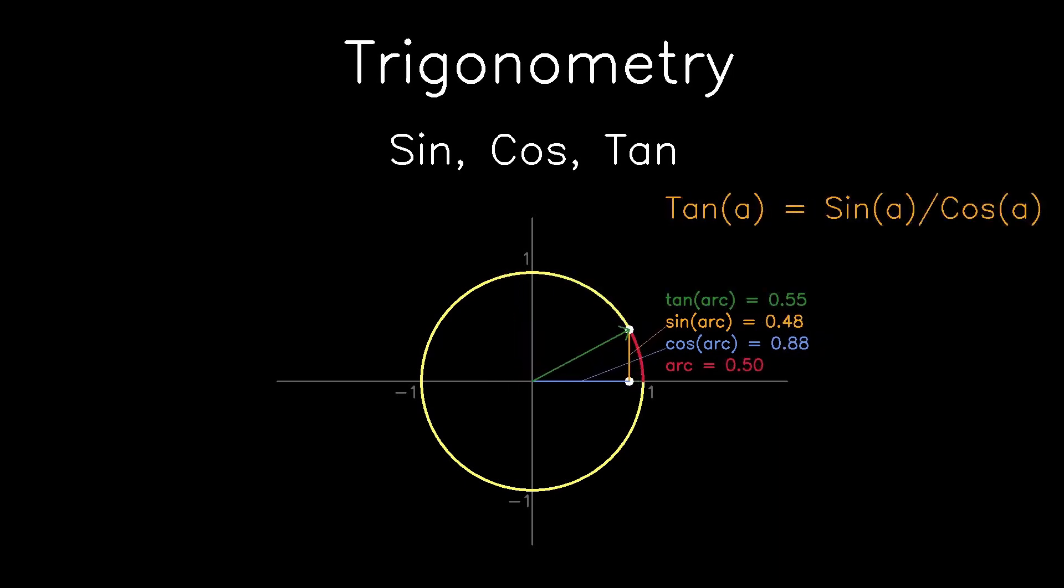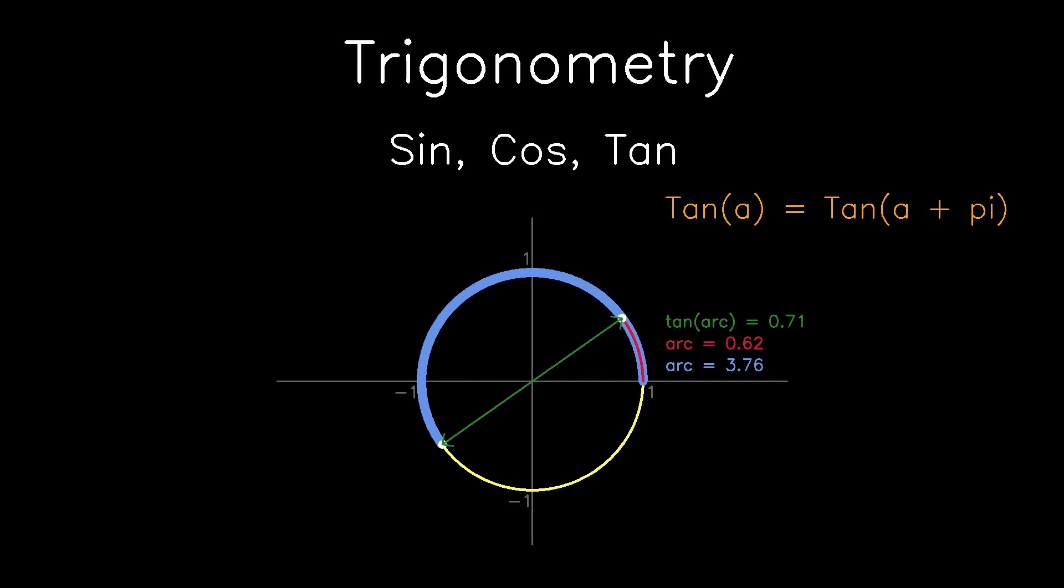Tan is a function. When you put in the arc length, it outputs the gradient of the unit vector. Gradient is always rise over run. The rise is always sine and the run is always cos. So tan is a composite function where tan A equals sine of A over cos of A. If the unit vector does a half turn, it will form a straight line and have the same gradient. Therefore, tan A equals tan of A plus pi.